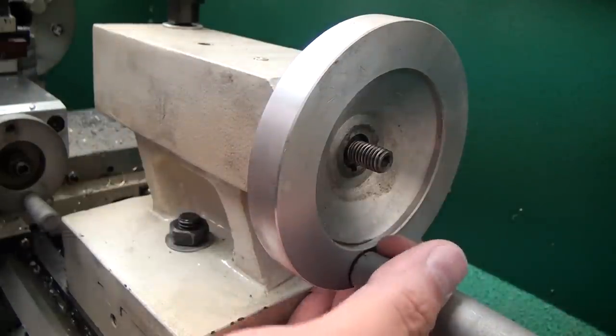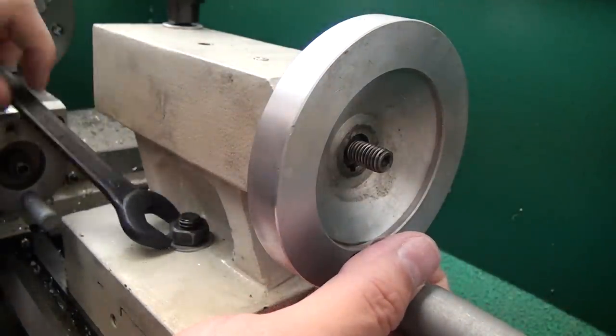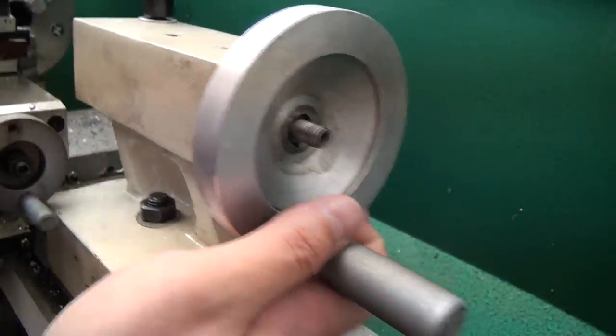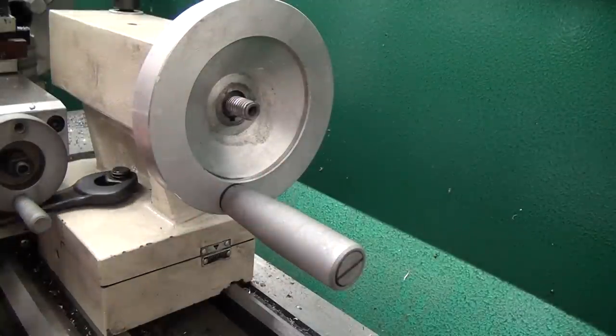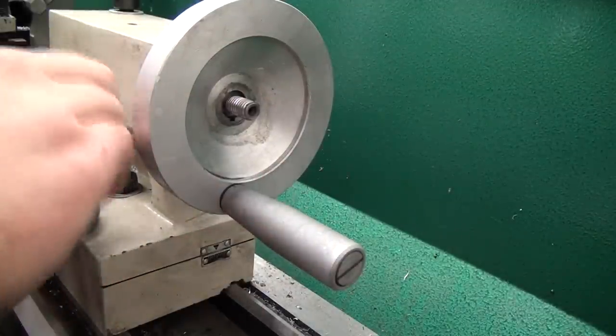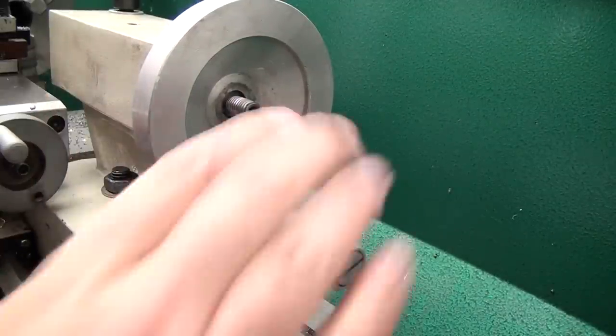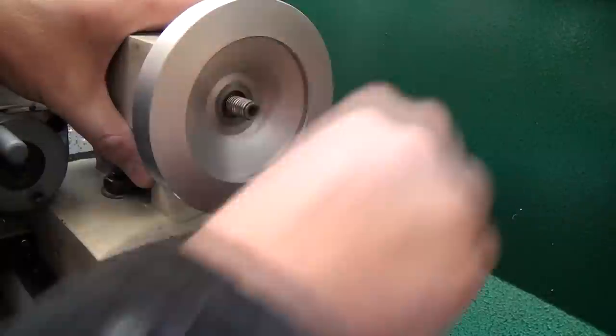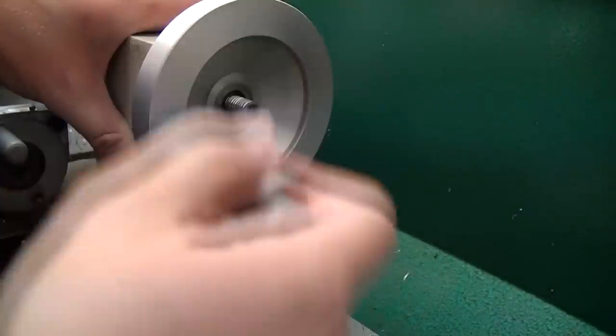If you need to do this to clean your tailstock, hopefully by following these steps you'll be able to pound it out pretty quickly. The first step is actually to remove a set screw that's in the top of the casting. I didn't film that part, but it's under my hand and you'll see the hole a couple of times throughout the video.